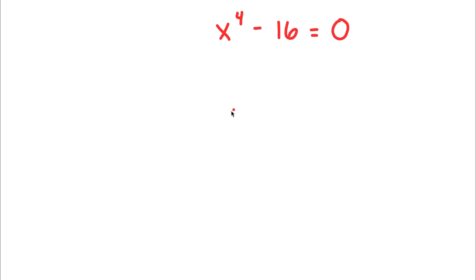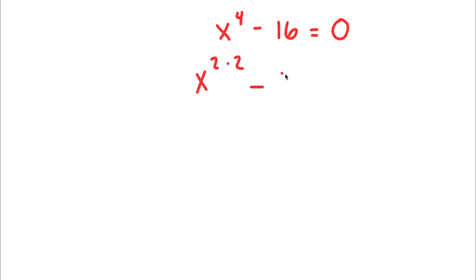In this problem, I have x to the power of 4 minus 16 is equal to 0. To solve this, I'm going to first rewrite x to the power of 4 as x to the power of 2 times 2. So now I have x to the power of 2 times 2 minus 4 to the power of 2 is equal to 0. I just simply rewrite 16 as 4 to the power of 2.